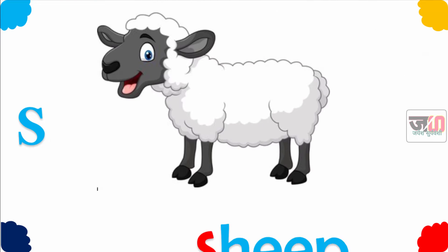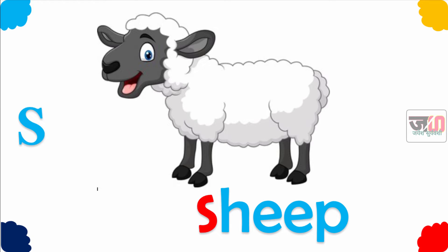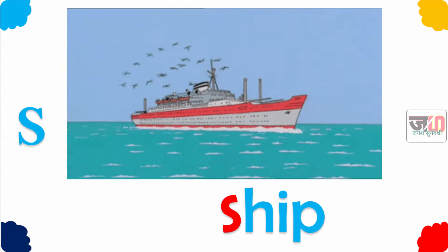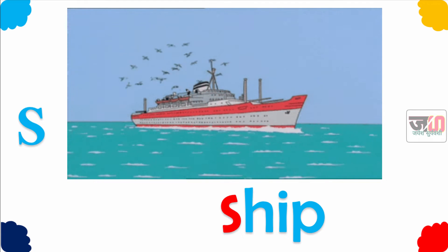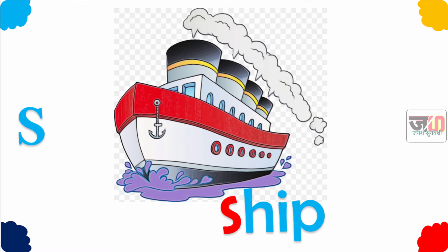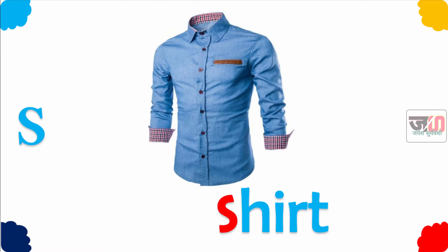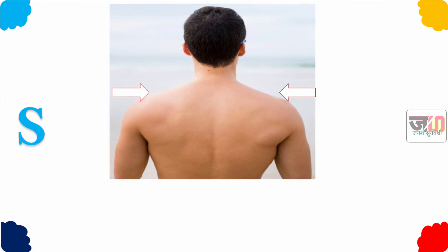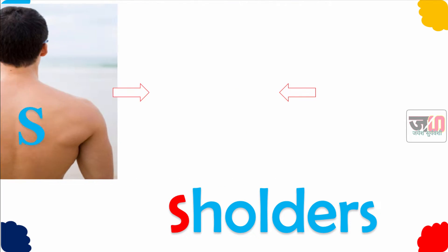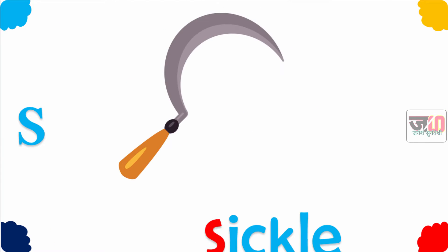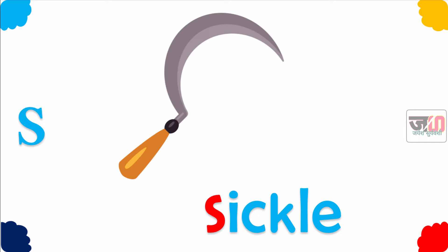S for Sheep. Sheep means mendi. S for Ship. Ship means jahaj. S for Shirt. Shirt means aangat ghala vaya. S for Shoulders. Shoulders means khande. S for Sickle. Sickle means vili, stop kapen heahe.